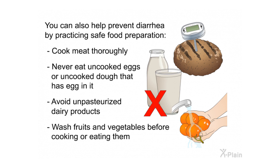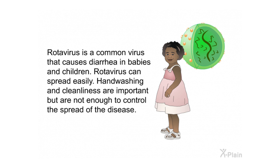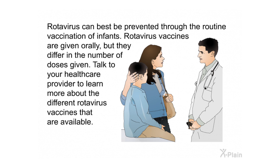Some types of diarrhea can be prevented by safe food handling and preparation. Cook meat thoroughly, never eat uncooked eggs or uncooked dough that has egg in it, avoid unpasteurized dairy products, and wash fruits and vegetables before cooking or eating them. Two specific types of diarrhea can be prevented: rotavirus diarrhea and traveler's diarrhea. Rotavirus is a common virus that causes diarrhea in babies and children. Rotavirus vaccines are very effective in preventing rotavirus and its accompanying symptoms.